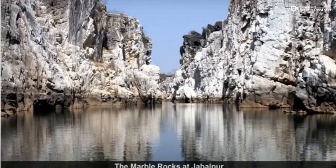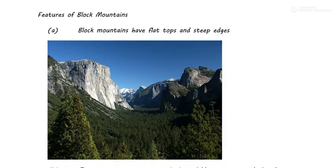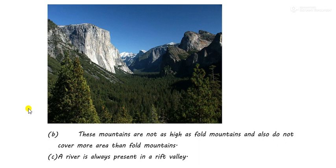Coming to the features: block mountains have flat tops and steep edges. The steep edges make it very difficult for someone to climb, while the tops are flat — unlike fold mountains, whose tops are conical. Block mountains are also not as high as fold mountains and do not cover more area than fold mountains, since they are formed due to cracks in the rock bed rather than the collision of tectonic plates.